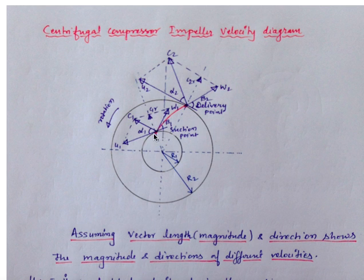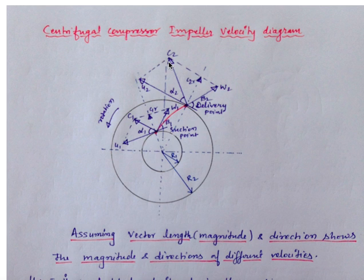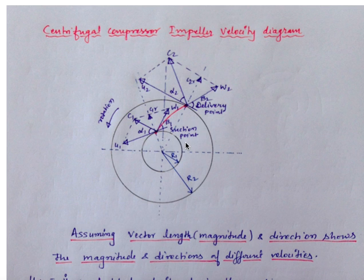Similarly, as gas moves from suction to the delivery point, we draw tangents at the delivery point and complete the parallelogram vector. The resultant at the delivery point is c2 at angle alpha2, while the suction resultant c1 is at angle alpha1. The tangent on the gas flow path at the suction point is at angle beta1, and at the delivery point it is at angle beta2. The perpendicular component of c2 on the radial direction is called the radial component of c2.